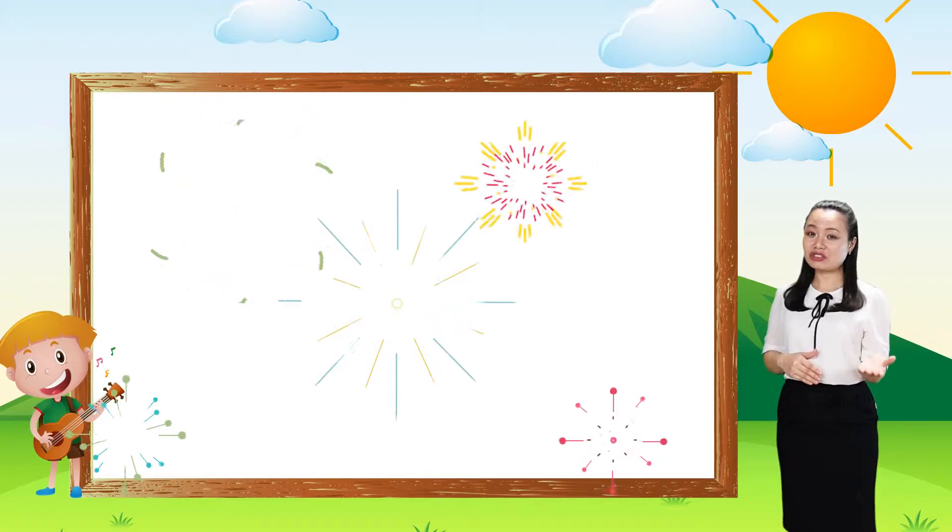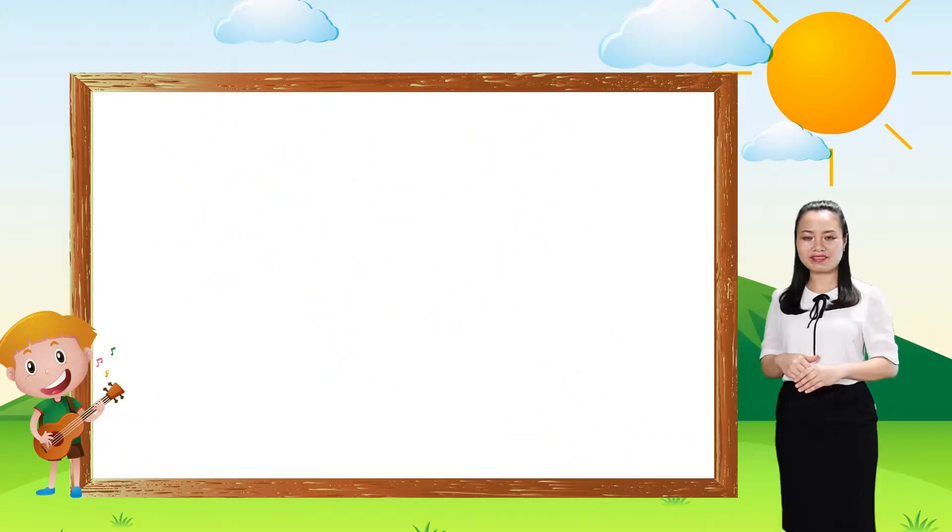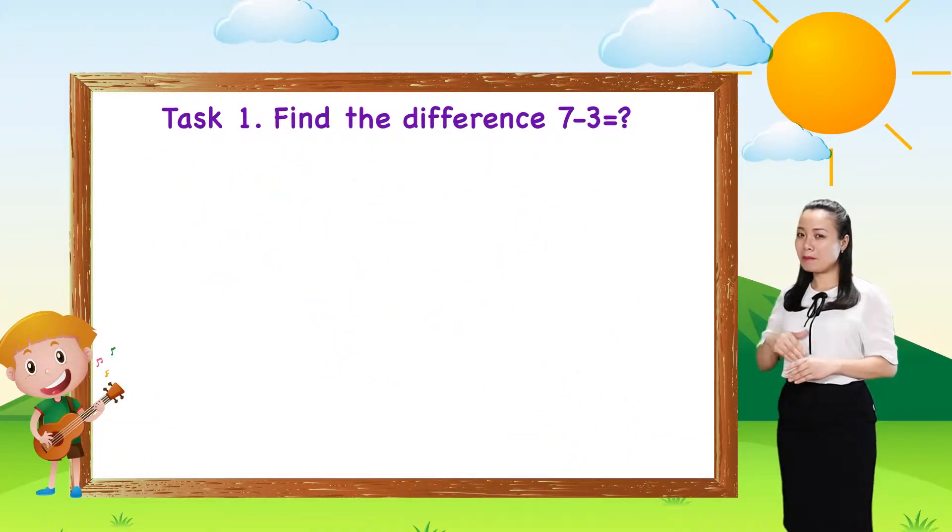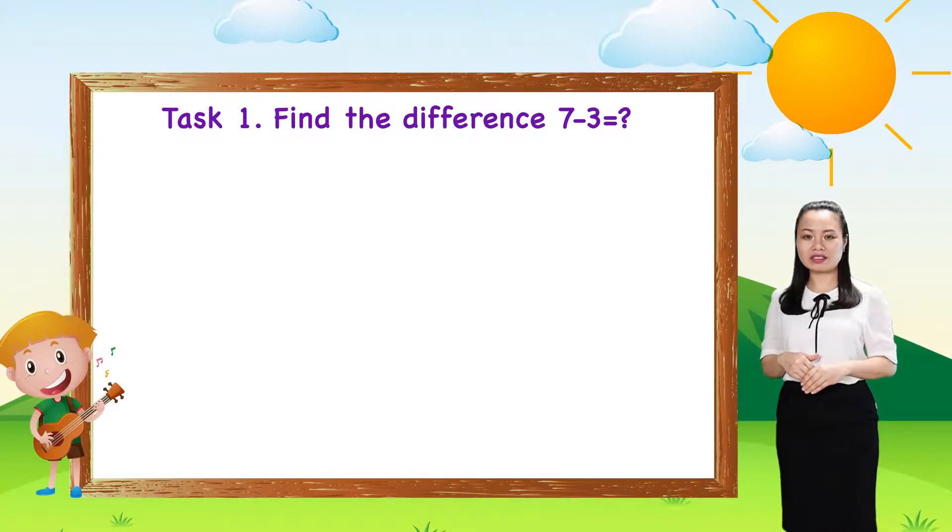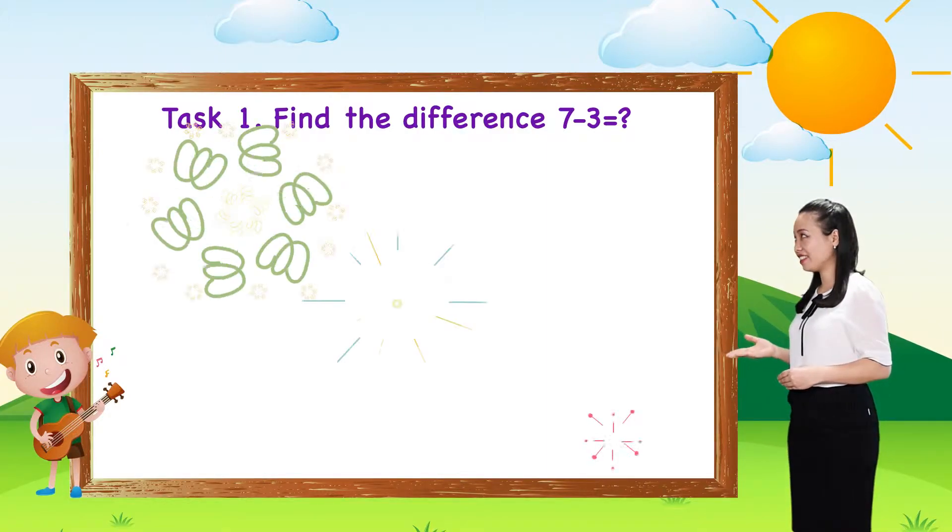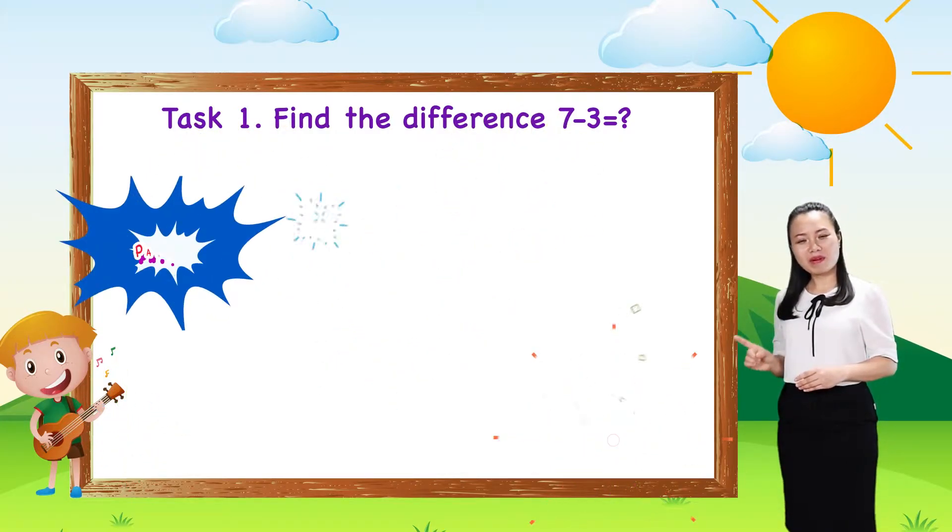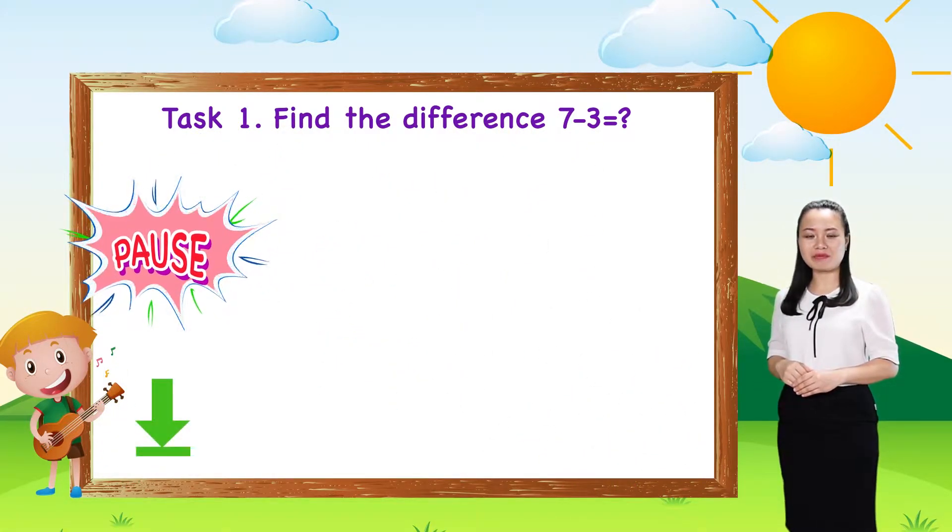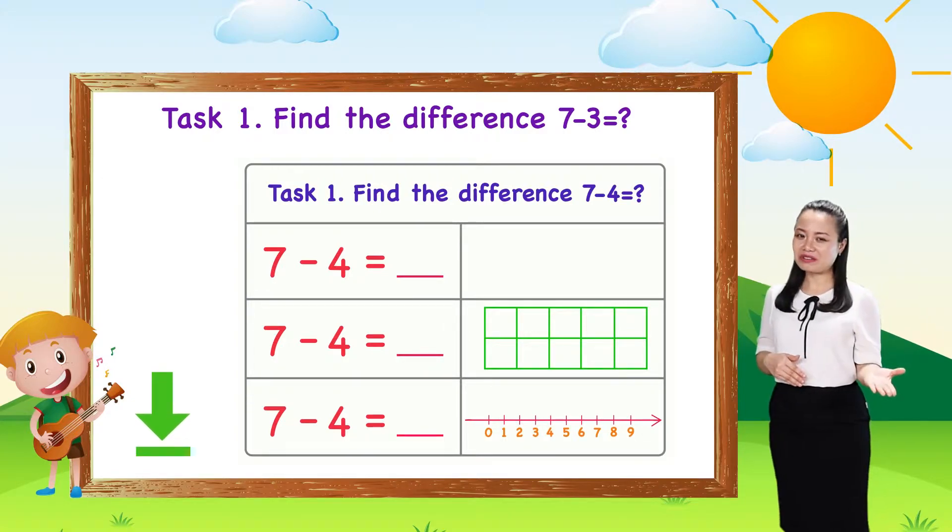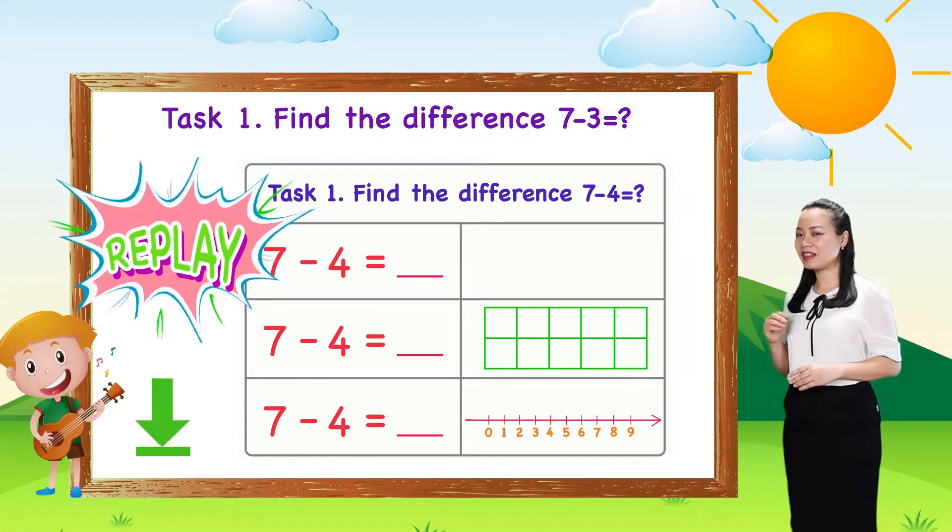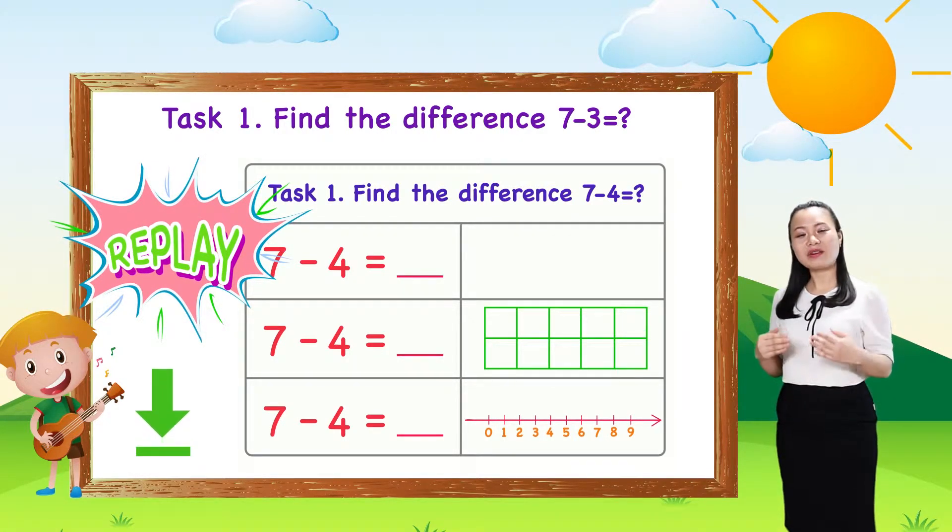Now, try to find the difference, 7 minus 3, using all the three ways we've just reviewed. To do this task, pause this video to download and print the worksheet below. Then, try to do it on your own. When you finish, replay the video and check the answer with me.